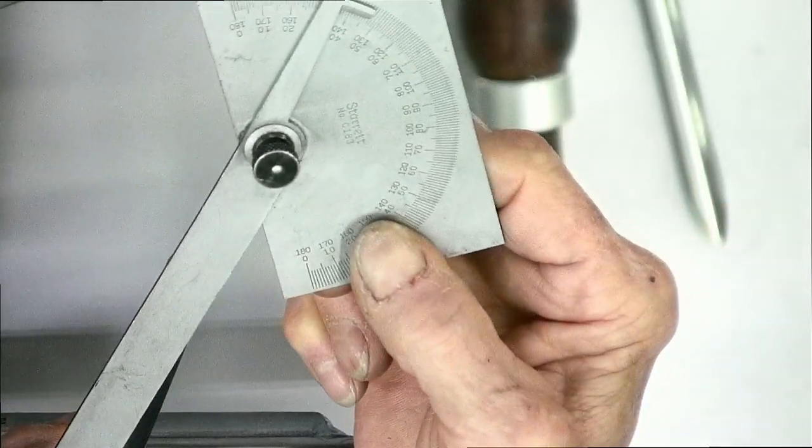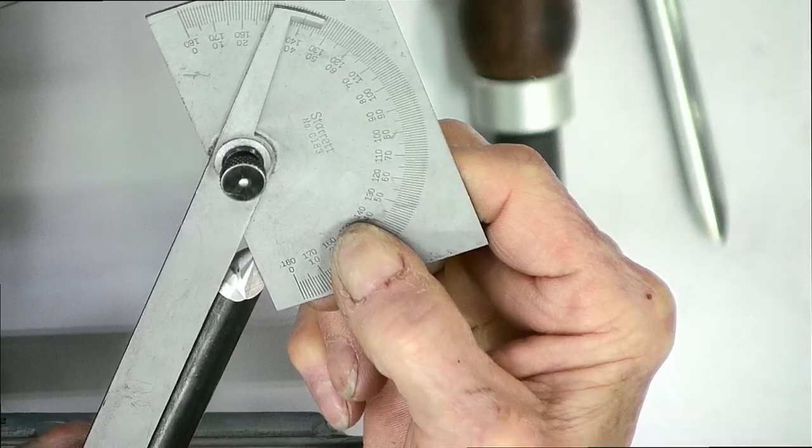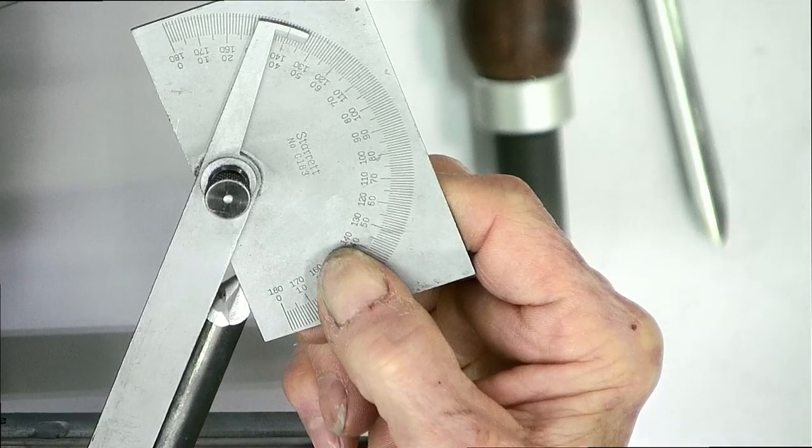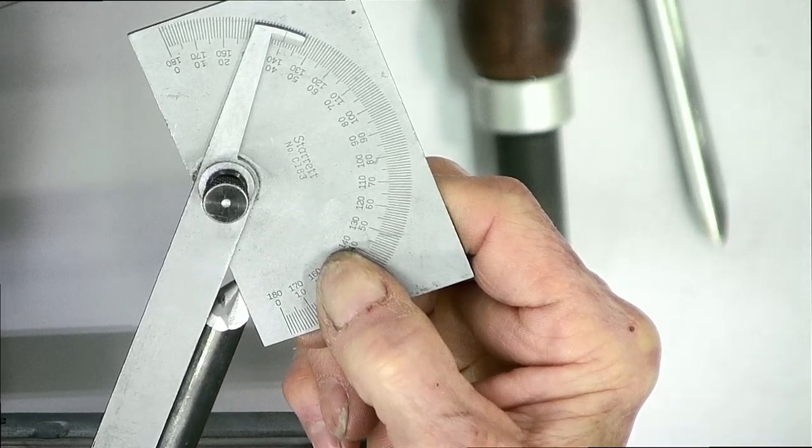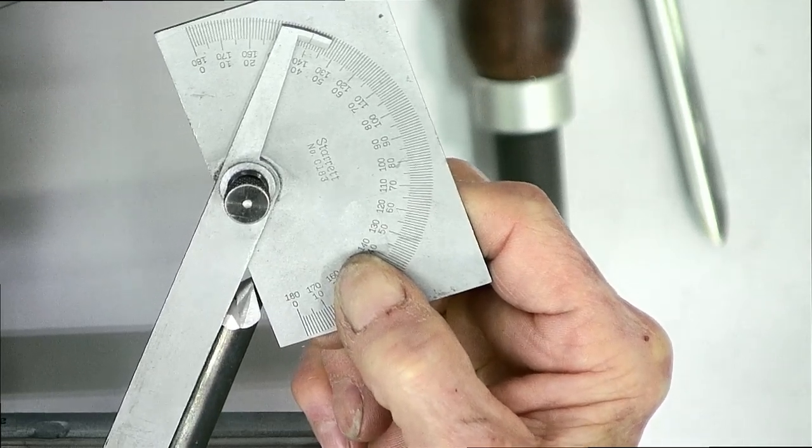The other 40 in the 40-40 grind is a measurement of the sweep angle. If I put one leg of the protractor along the wing and the other parallel to the shaft of the tool, I would also get a 40 degree angle.